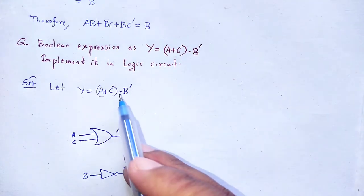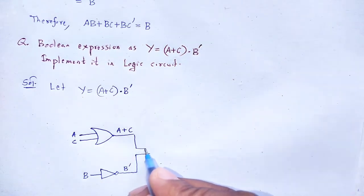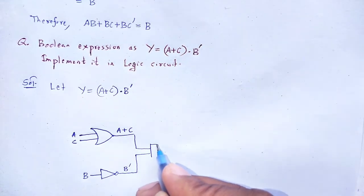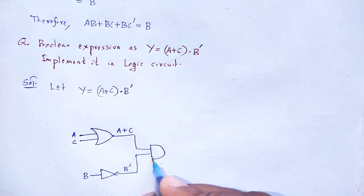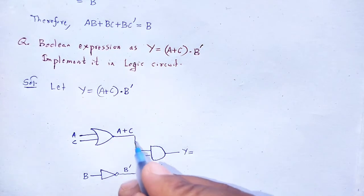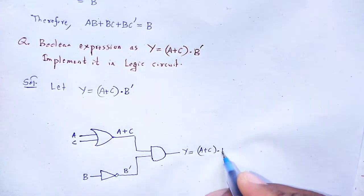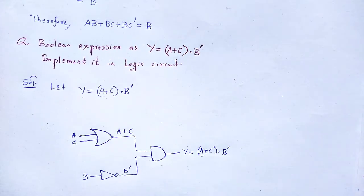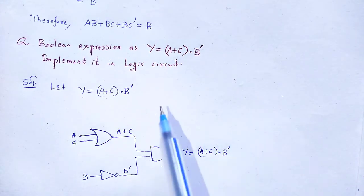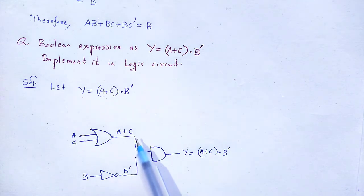Since the operation is AND (dot), these two values — (A + C) and B' — are the inputs to an AND gate. At the output Y, we obtain (A + C)·B'. In this way, from that Boolean expression we implement the particular logic circuit.